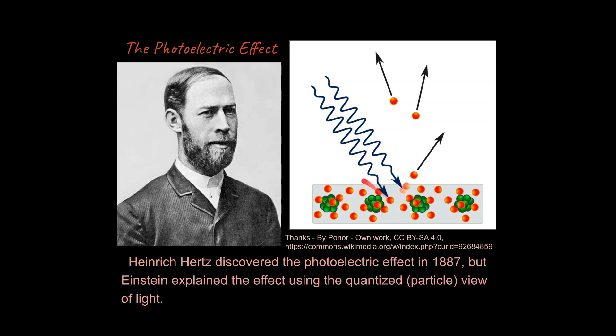But what he found is when he's shown light of different wavelengths or different frequencies, or you could say different colors, on metal surfaces, you would in some cases get electrons being ejected off of the surface. And in some cases you would not have electrons being knocked off of the surface, which led to problems.